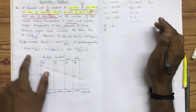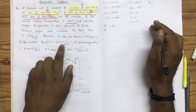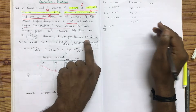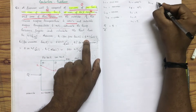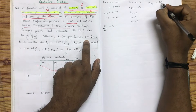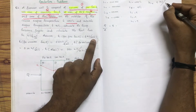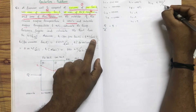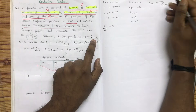First of all, we have K. K1 is equal to 4 kJ per meter per hour per degree.